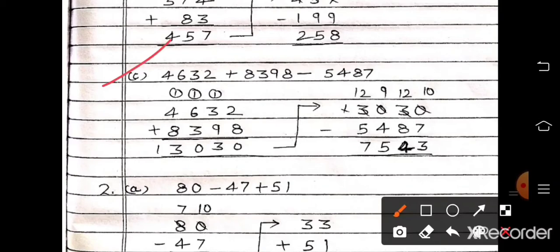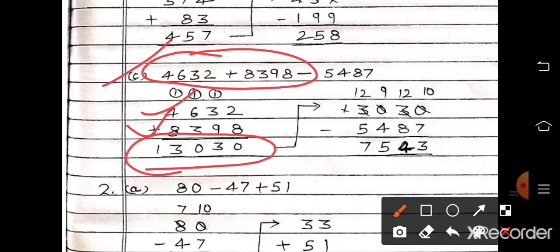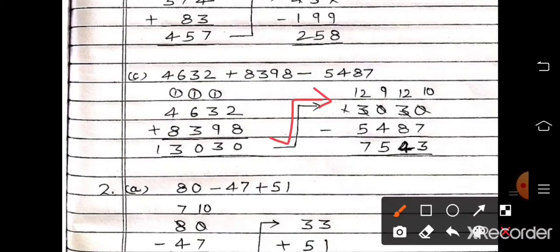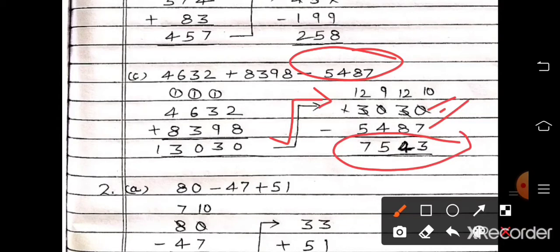Now part C: 4,632 plus 8,398 minus 5,487. First add both these numbers. Write them and add — the answer will be 13,030. Now write your answer here and subtract 5,487 from it. Arrange, take borrow — the answer will come 7,543.